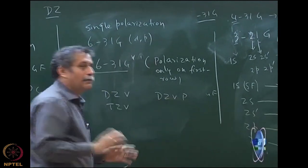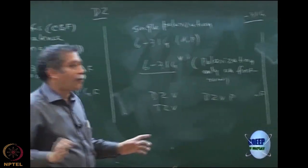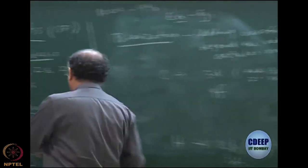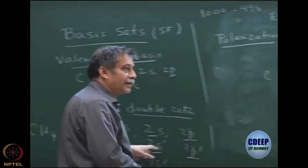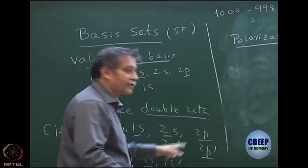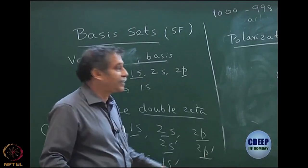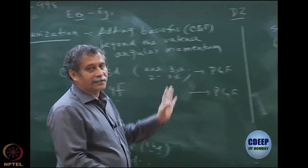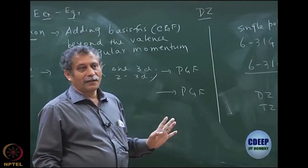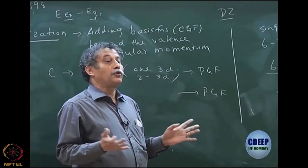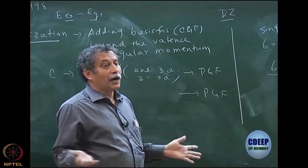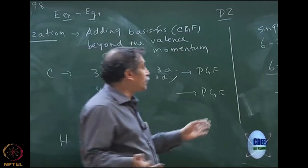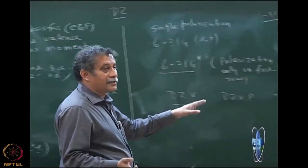Let's say you have two choices: make it triple-zeta valence — adding one more S function and one more P function — or add a polarization function. If you can do both, that is ideal. But if you cannot do both, there is a question of balance.